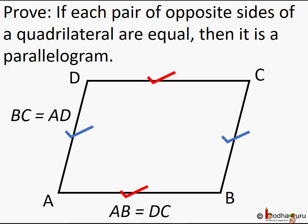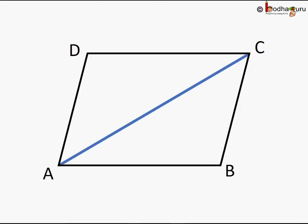Now let's prove the converse: if each pair of opposite sides of a quadrilateral are equal, then it is a parallelogram. We take quadrilateral ABCD in which AB equals DC and AD equals BC — that is, each pair of opposite sides are equal. We draw diagonal AC.